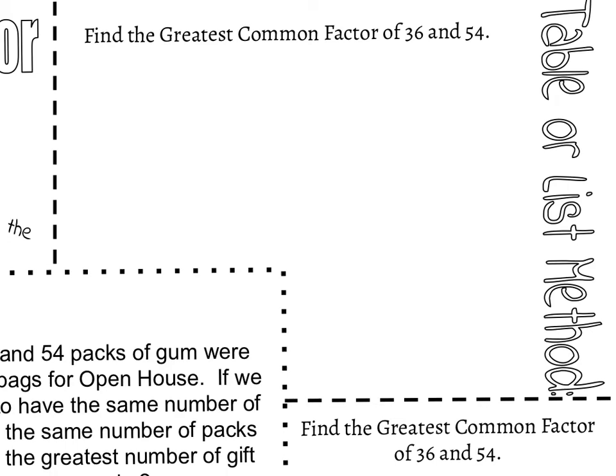I'm going to look at three different methods to find the greatest common factor of these two numbers. Our first method is called the table or list method. This is a really popular method and a lot of students tend to be familiar with it. However, there are some problems that come up when we look at it. Because it's a list method, we're going to come up with a list of all the factors of these numbers.